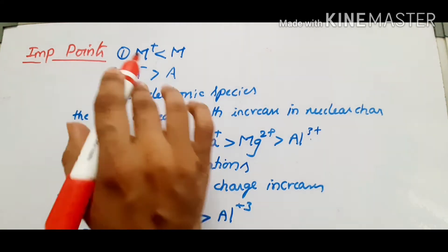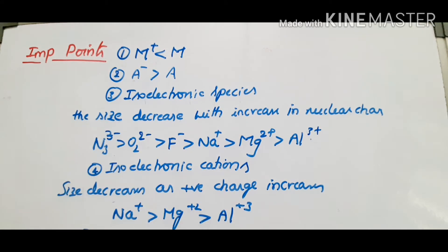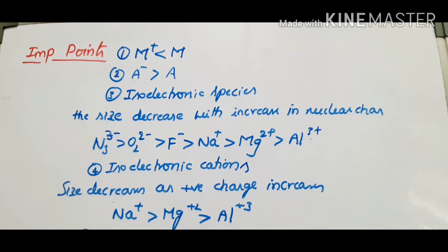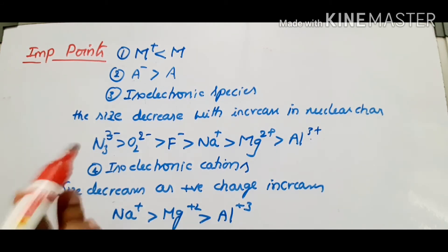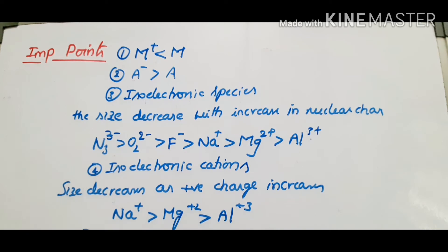M+ is less than M — this is already discussed. The cation size is smaller than the parent neutral atom. For the anion, the ionic radius is larger than the neutral atom, and the number of shells increase.